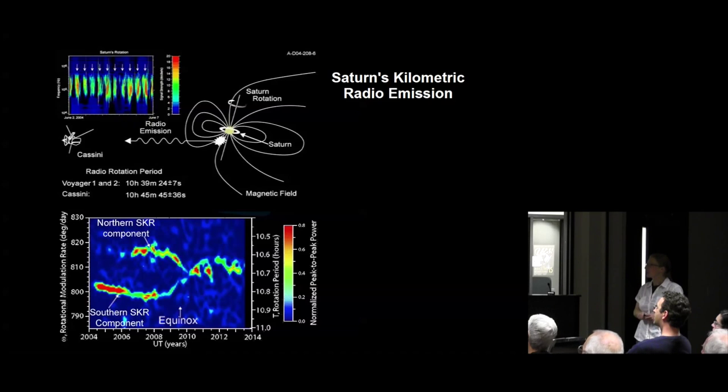Another feature is something that Voyager detected. It's a kilometric radio emission like a pulsar beacon or lighthouse. As the planet rotates, there's a beacon of radio emission coming around. Voyager 1 and 2 both measured it at about every 10 hours, 39 minutes, 24 seconds. We thought this is great, it's connected to the rotation period of the planet.